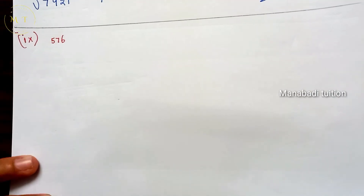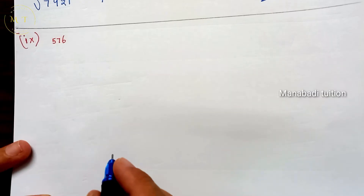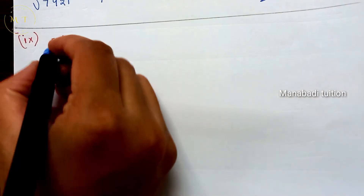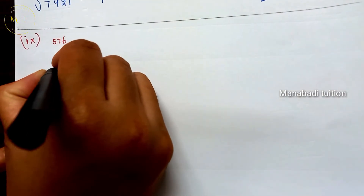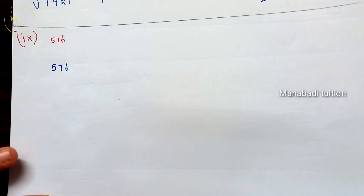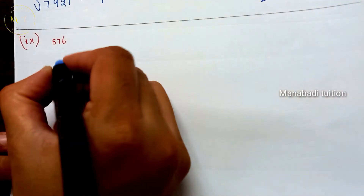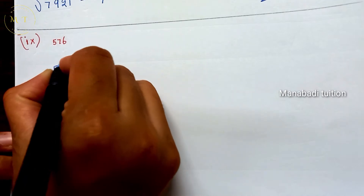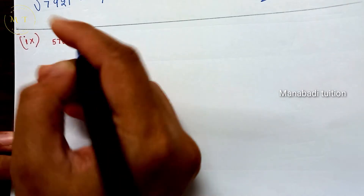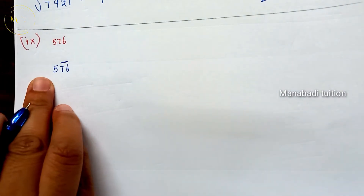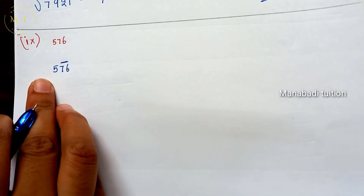For 576, first you have three digits. You can write pairs of 2 numbers from right to left — you can write the right side and left side. You can write the pair 76, and then the number 5.